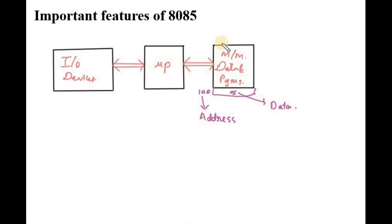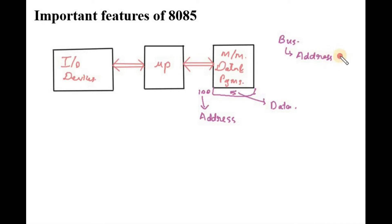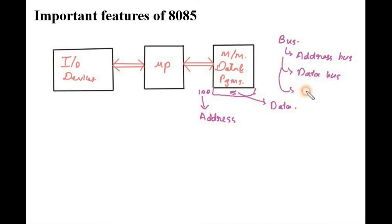The microprocessor uses bus architecture. A bus is not a single location. There are different types of buses in a microprocessor: the address bus, the data bus, and the control bus.